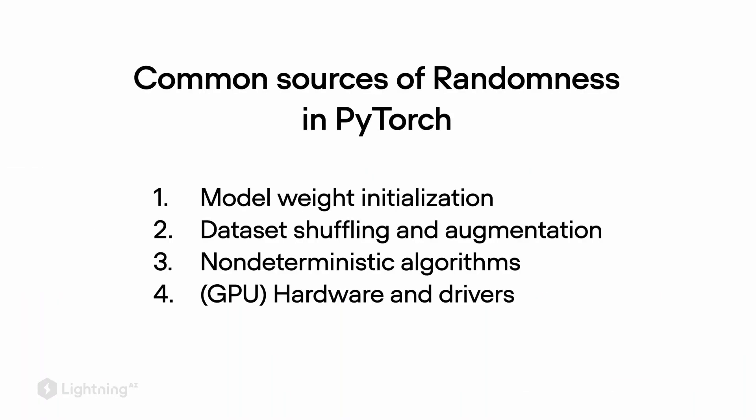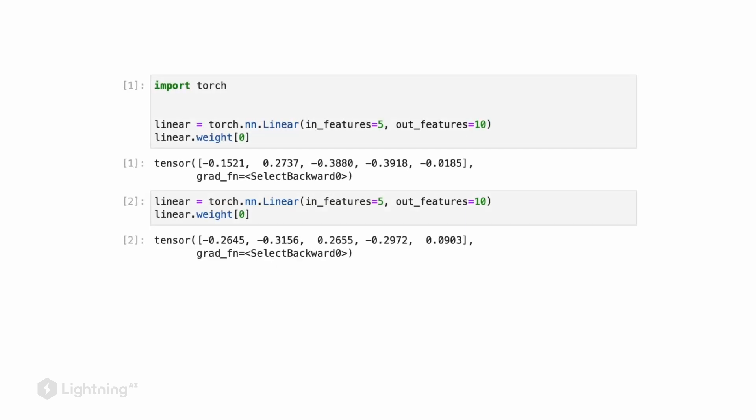In the previous video we talked about different sources of randomness. Let's now talk about how we can control these sources of randomness, and let's start by talking about the model weight initialization step. When we initialize a layer or model, you will notice that the model weights are different each time we initialize that layer.